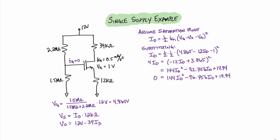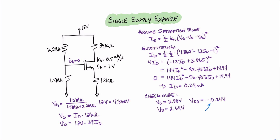Solving the quadratic gives two values of ID. Checking against those two values, we find that ID equals 0.24 milliamps. Now is the time to check our mode. Using 0.24 milliamps for drain current and multiplying by 12 kilohms, we find that VS equals 2.88 volts. Similarly, plugging into the VD equation, we find that VD equals 2.64 volts. Now we can find VDS, and we find that value to be minus 0.24 volts, which is obviously not possible for saturation mode. Therefore, we must be in triode mode or cutoff — let's assume triode mode and resolve.